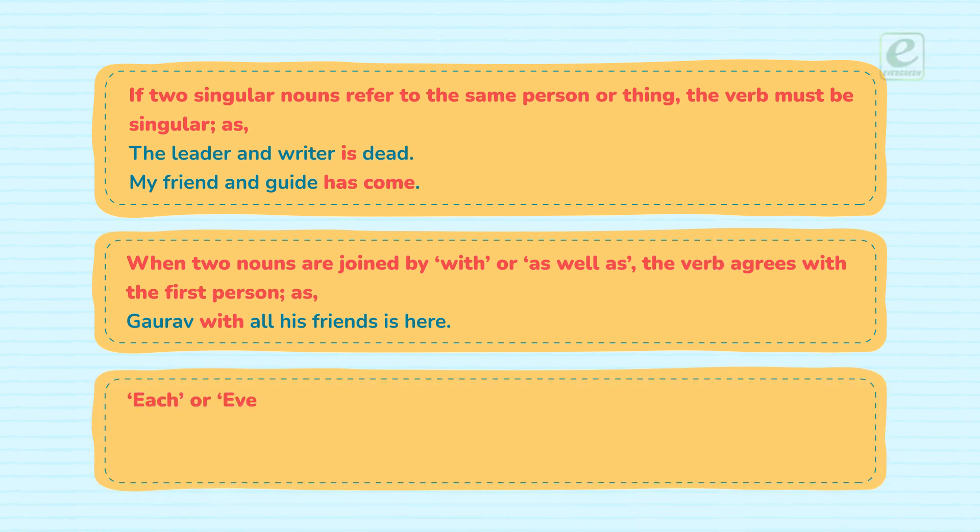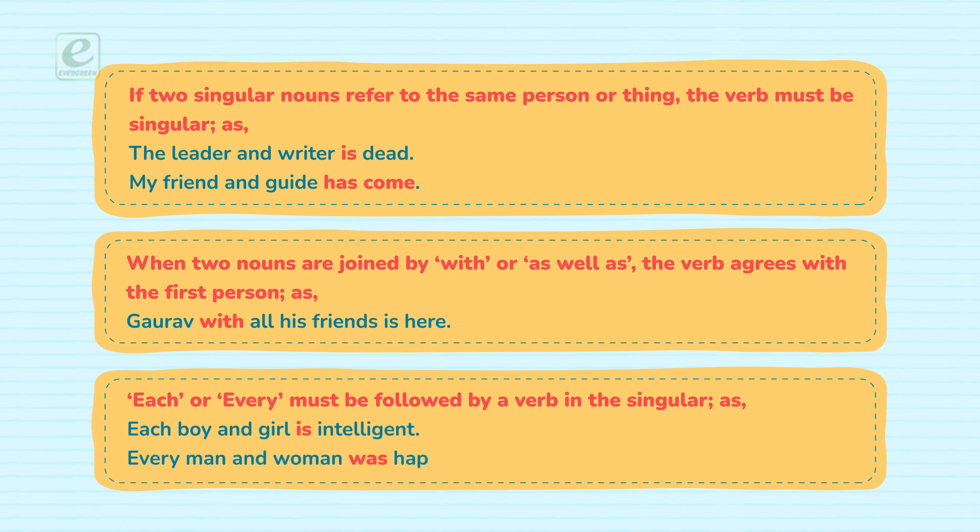'Each' or 'Every' must be followed by a verb in the singular. For example: Each boy and girl is intelligent. Every man and woman was happy.